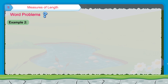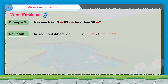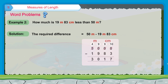Example 2: How much is 19 meters 83 centimeters less than 50 meters? Solution: The required difference = 50 meters − 19 meters 83 centimeters. Hence, 19 meters 83 centimeters is 30 meters 17 centimeters less than 50 meters.